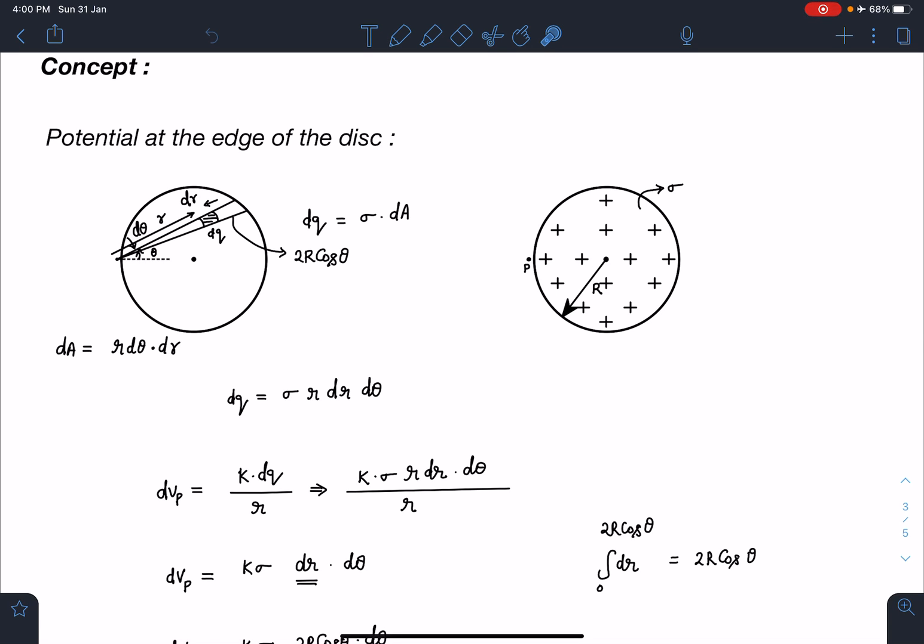If I substitute the value of dq, I am going to get this r—r gets cancelled, and finally I am going to get dVp equals k*sigma*dr*d(theta).